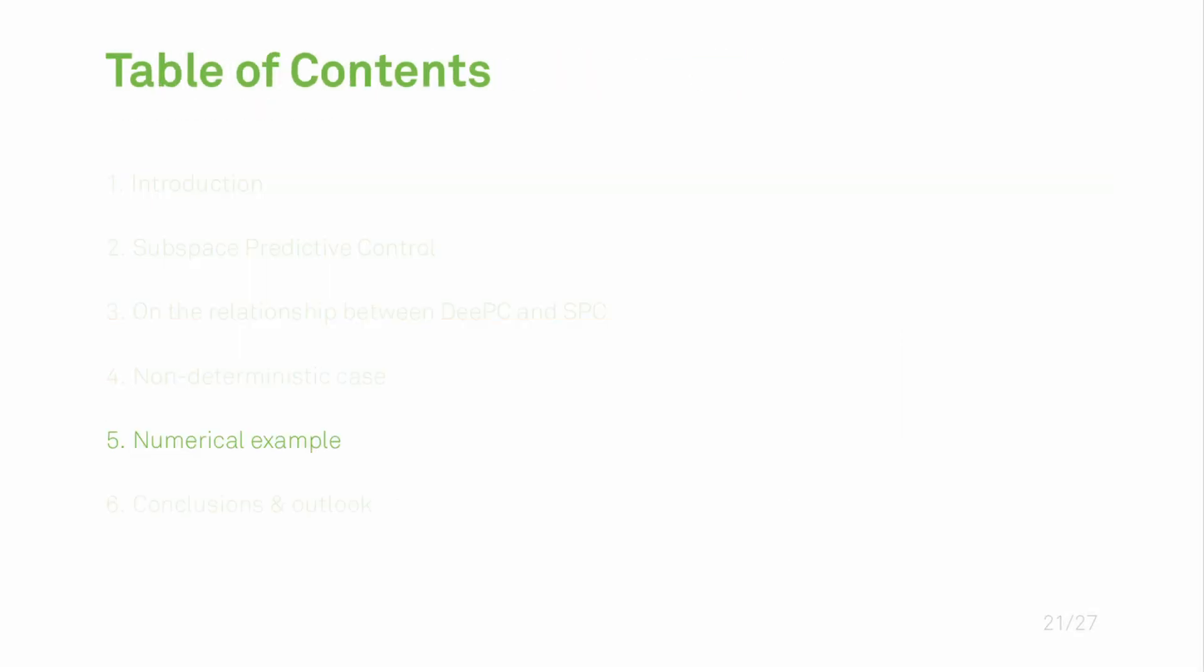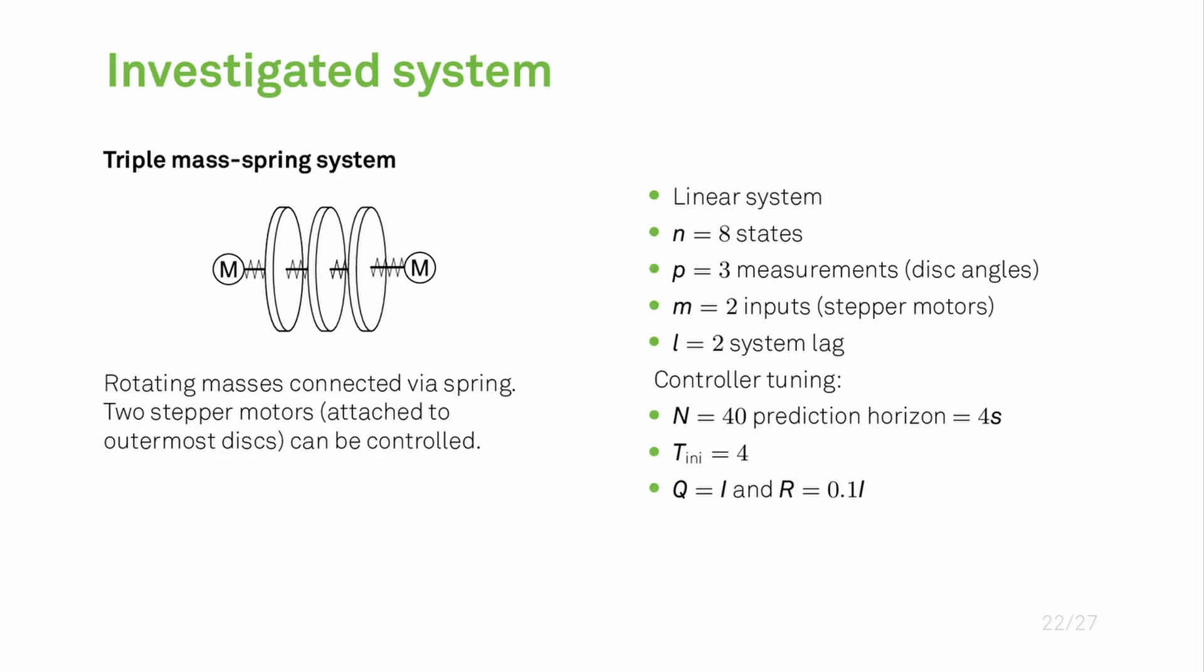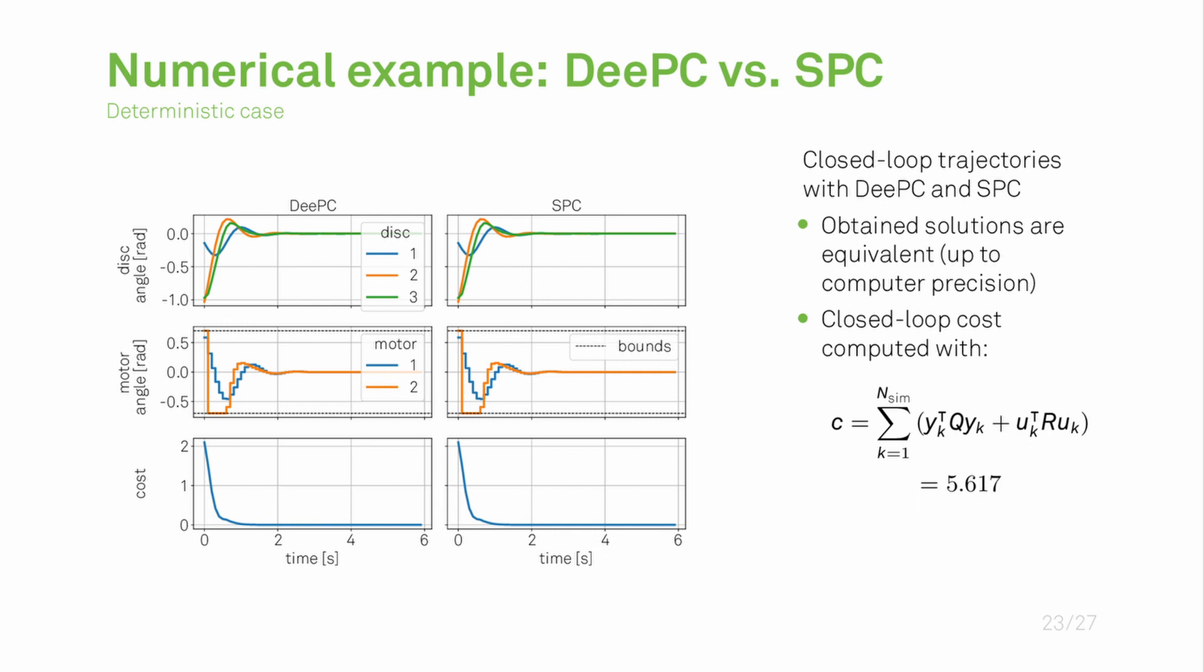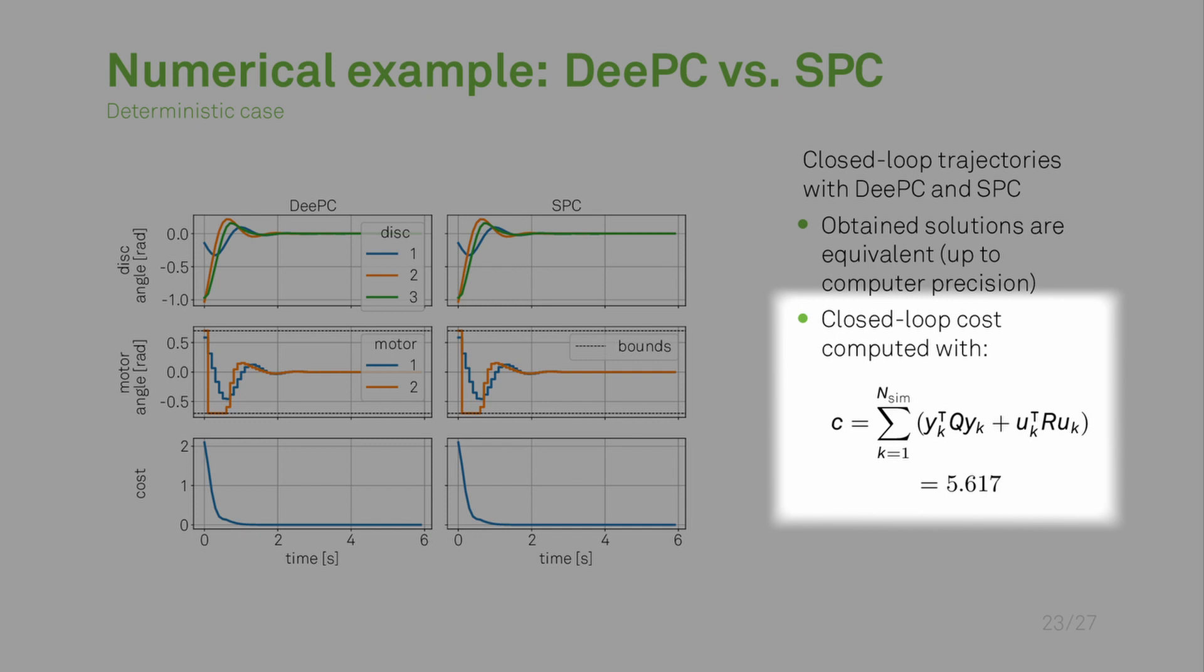This brings me to the next section: the numerical example. We are investigating here a triple mass spring system consisting of three masses which are rotating with two motors to influence the system. All of the important parameters are given here on the right hand side. The first investigation that we conducted was about the deterministic case where we compared DeePC and SPC in a simple regulation task. The measured output should be brought to zero and we see that both controllers succeed in this task. We can see visually but also check by the cost in the end that both solutions are exactly equivalent up to computer precision, which shouldn't come as a surprise as we have stated in theorem one.